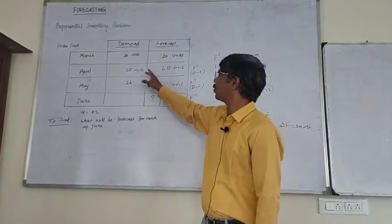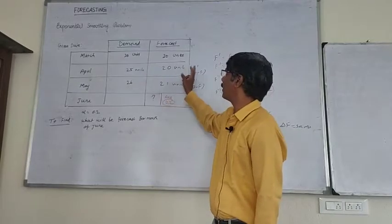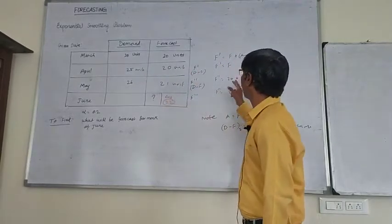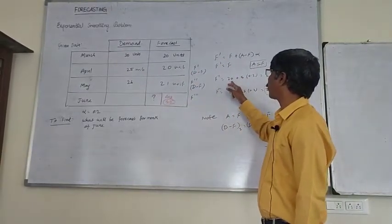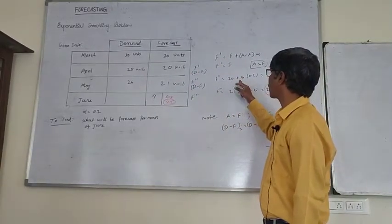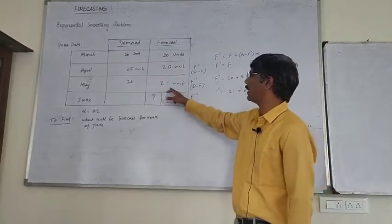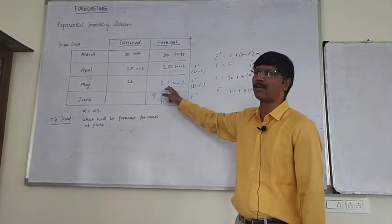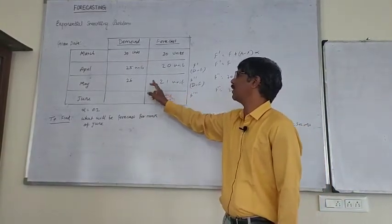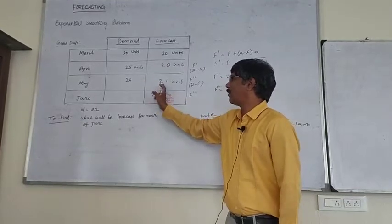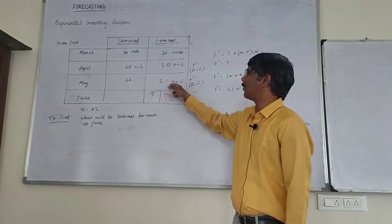First, we have the data once, we have the data, and if we use the data, so we have 10.5 to 20 plus 5 into 0.21. Next, the 4th character, if you want to run 21.